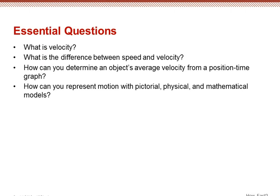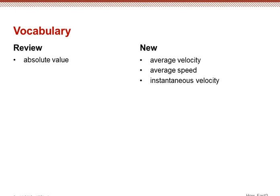So we're going to answer the essential questions: what is velocity? What is the difference between speed and velocity? How can you determine an object's average velocity from a position-time graph? And how can you represent motion with a pictorial, physical, and mathematical model? A few terms that we need to understand from this video are average velocity, average speed, and instantaneous velocity. They're all very similar, but they're slightly different.